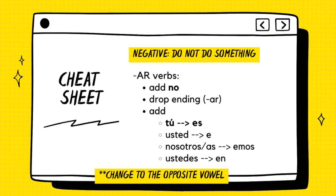Here's a cheat sheet for your negative commands — the ones where you do not want to do something. For AR verbs, first add the word no, then drop your AR ending, and add: ES in your tú form, E in your usted form, Amos in your nosotros or nosotras form, and En in your ustedes form.